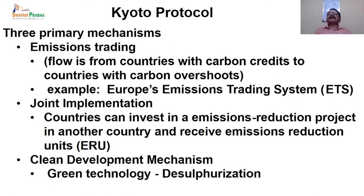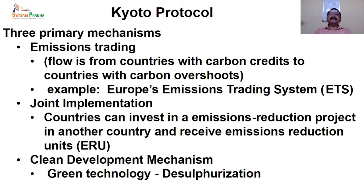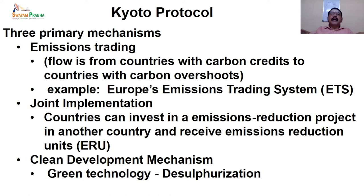The carbon credit system was introduced: if one country is emanating 1000 ppm of carbon and another country is emanating only 800 ppm, the 200 ppm difference creates a carbon credit that goes to the second country. To have the carbon credits uniformly distributed among partner countries, the European Emissions Trading System was jointly implemented with very many countries so that the carbon overshoots could be minimized.